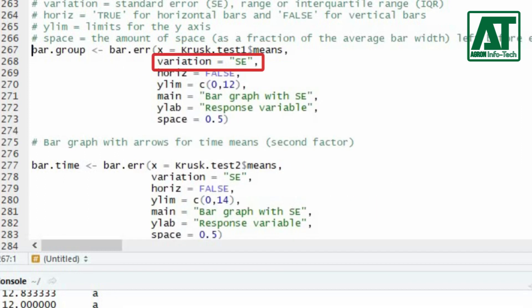For variation you can use standard error, range, or interquartile range. Here I shall use standard error. Y limit specifies the length of Y coordinate axis. You can use maximum value of the response variable or greater than maximum value to adjust error bars within this limit.